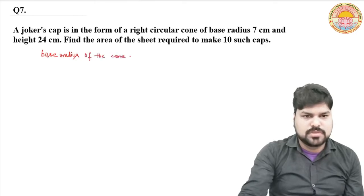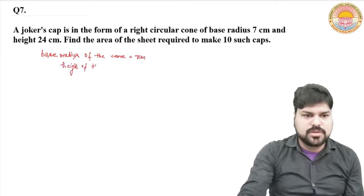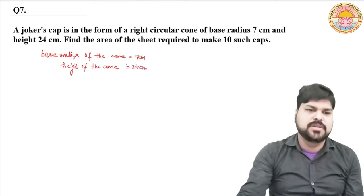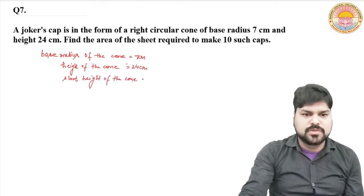We have to find the area of the sheet. The radius of the cone is 7 cm and height of the cone is 24 cm. Now we need to find slant height.